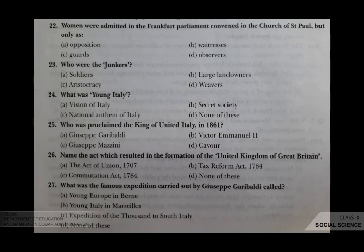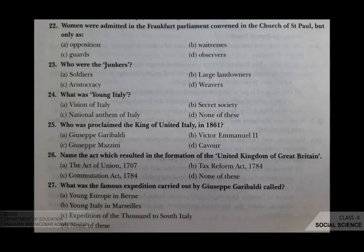Name the act which resulted in the formation of the United Kingdom of Great Britain. Your options are A the Act of Union 1707, B Tax Reform Act 1784, C Commutation Act 1784, D none of these. The correct answer is A, the Act of Union 1707.